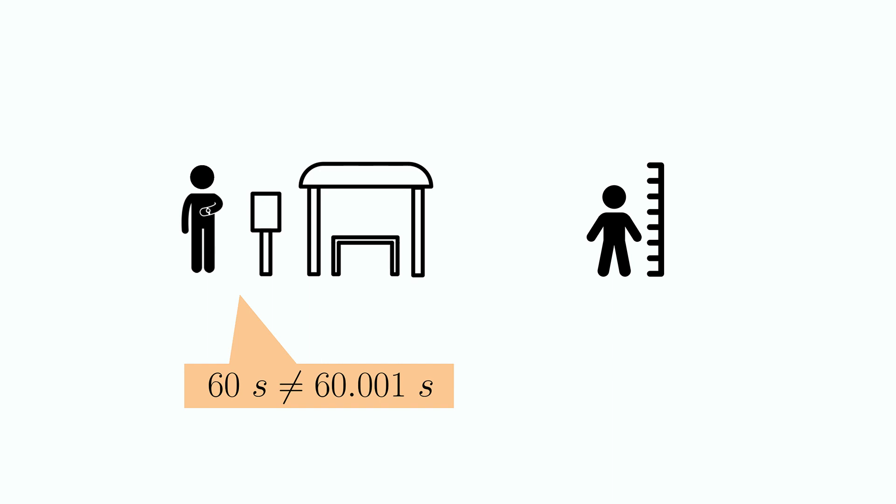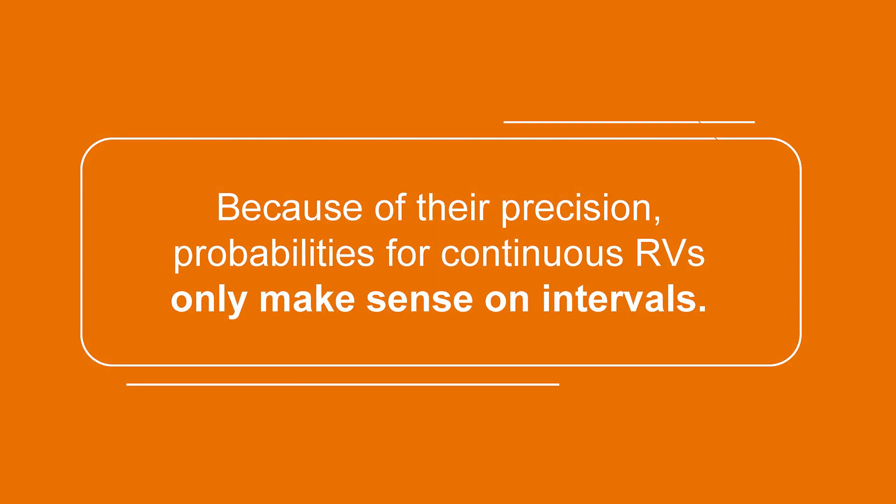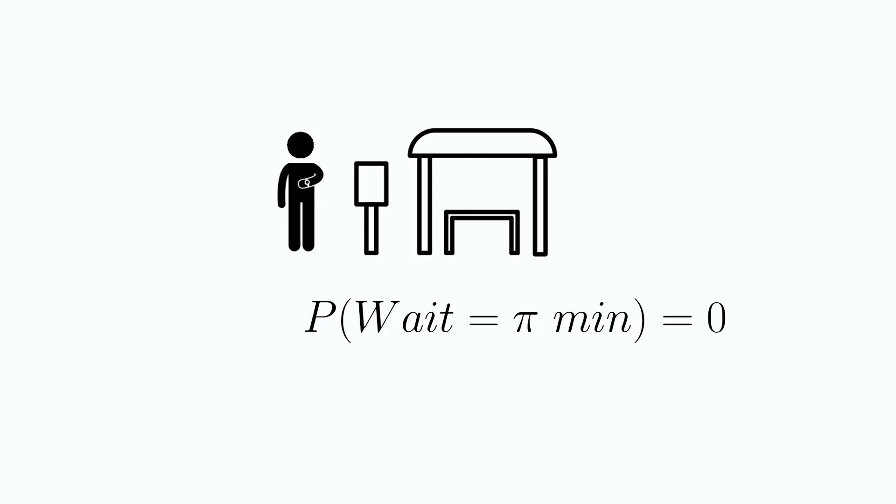Since continuous random variables can take on arbitrarily precise values, probabilities for continuous random variables only make sense on intervals. In essence, the probability that you are going to wait pi minutes is zero. Eventually, if you record enough decimal places for your waiting time, you will disagree with any exact measurement.